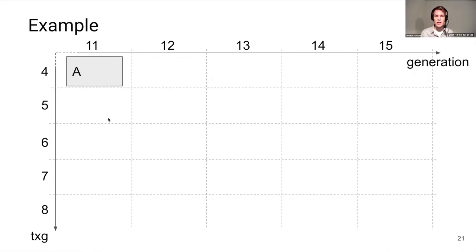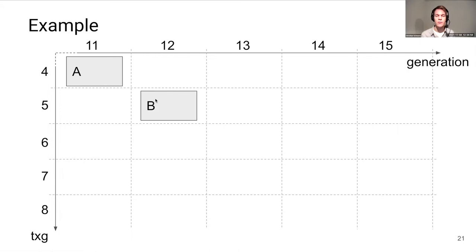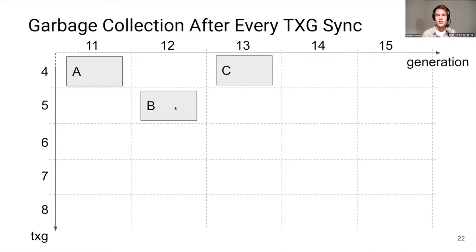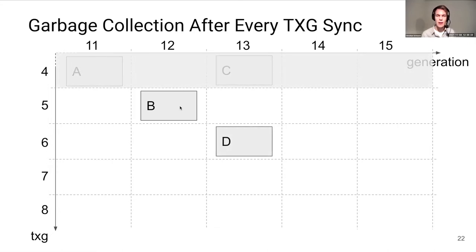At the beginning, the storage substrate was empty. We add log record A for a change in transaction group 4, generation 11. Then we write record B for transaction group 5, generation 12 — its generation is higher than A's, expressing a replay dependency of B onto A. Then we write record C into the next generation 13. While writing new records, garbage collection may kick in in the background and remove records for transaction group 4, since it has been synced.